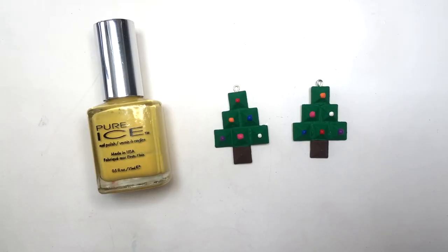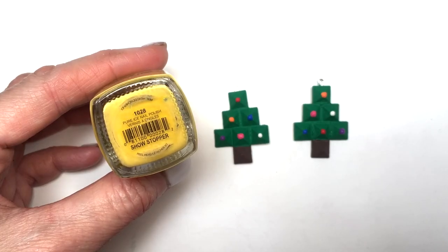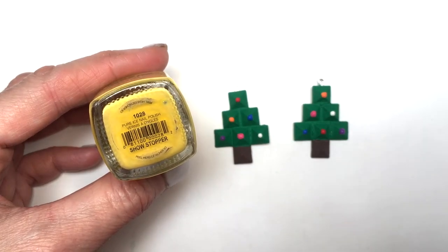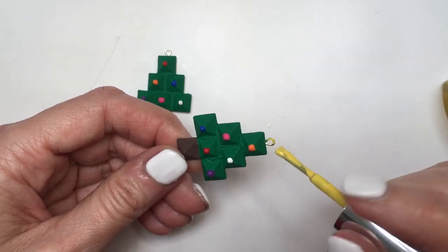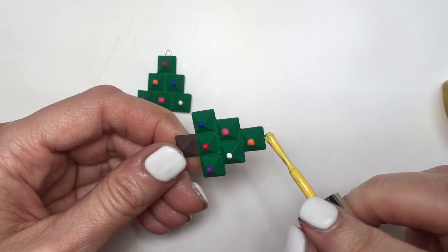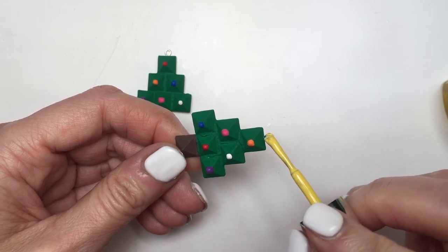As a final step, I'm going to be adding the star, sort of. I'm going to be using this Pure Ice polish called Showstopper. I've had this nail polish for a while, at least five years. I'm not really sure if they still have this brand or this color—I'm pretty sure it does still exist—but any yellow will do. I'm going to be painting the loop of my eye pin.